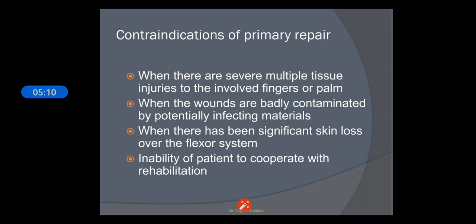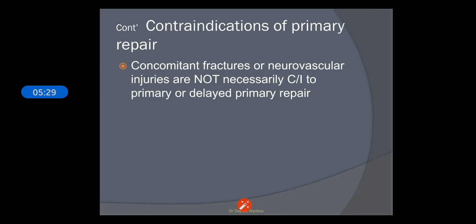The contraindications for repair include: severe multiple tissue injuries to the involved fingers, badly contaminated wounds, significant skin loss over the flexor system, or inability of the patient to cooperate with the rehabilitation team. Some concomitant fractures or neurovascular injuries are not necessarily contraindications to primary or delayed primary repair.